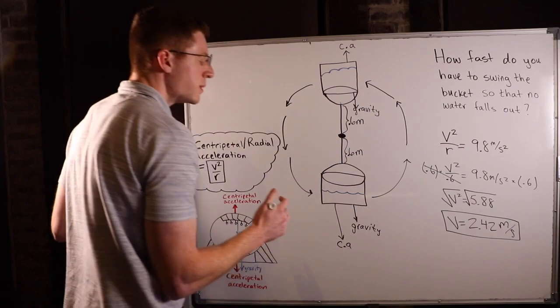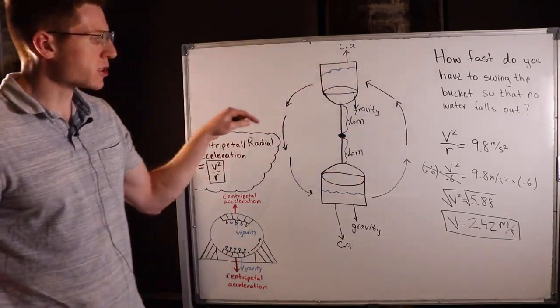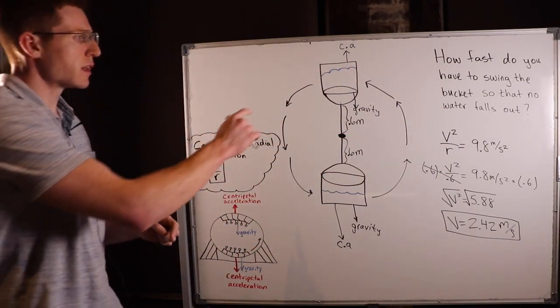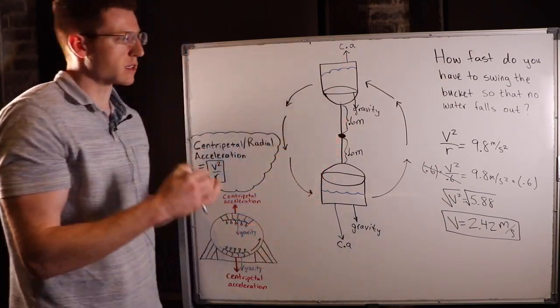So we know we have to be swinging this bucket 2.42 meters per second, at least, so that the water doesn't spill out of the bucket at the top of the circle.